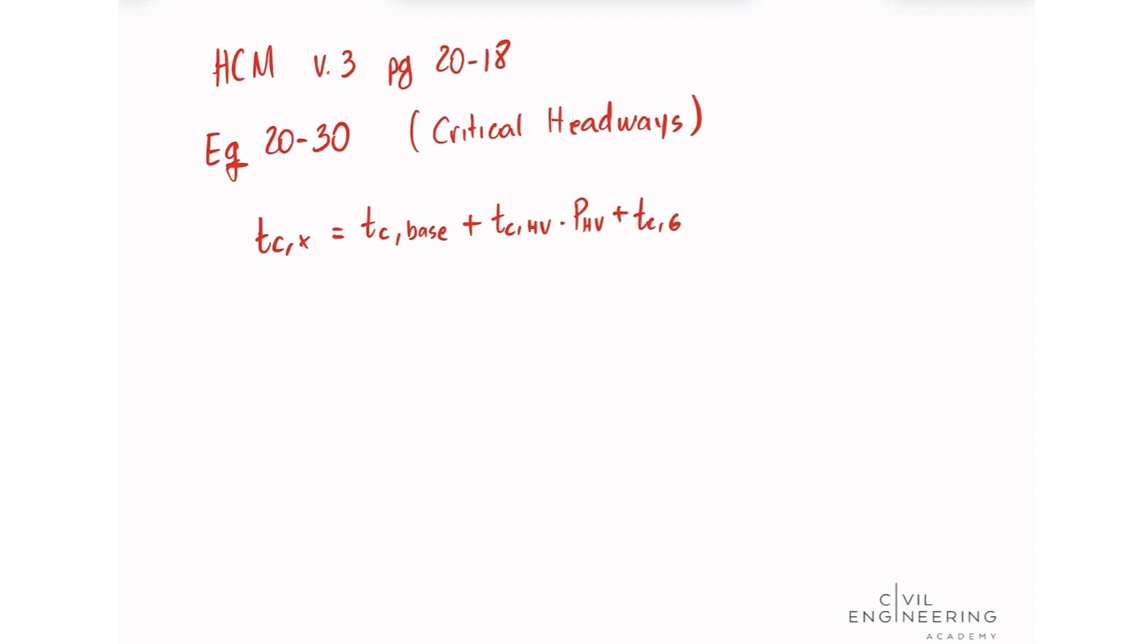Plus T sub CG, which is another adjustment factor for the grade for given movement, times G, which is the percentage grade, minus T3LT. This is the adjustment factor for the intersection geometry.